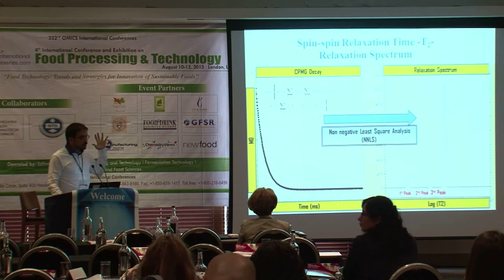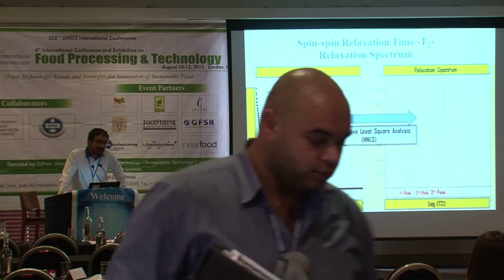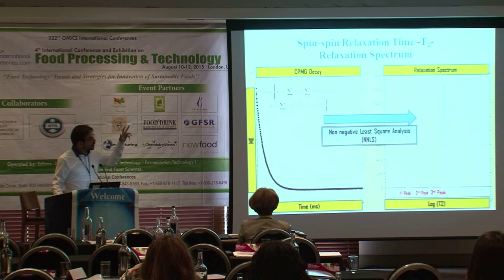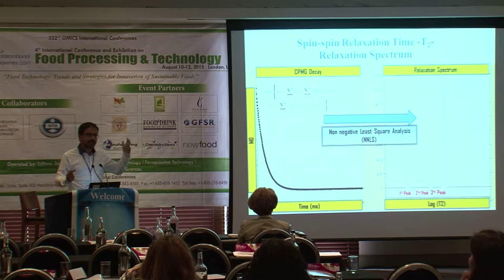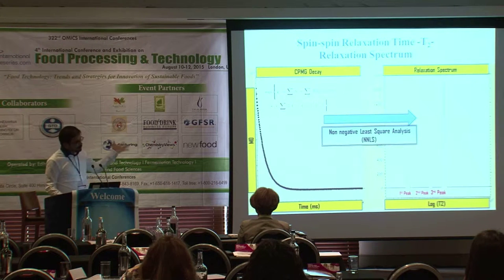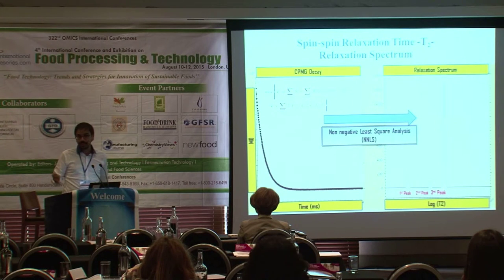What NMR relaxometry means is: whenever we have this decaying signal, we apply a mathematical transformation — the inverse Laplace transform — to obtain a spectrum called the relaxation spectrum. Depending on whether it is T2 or T1, it's called the T2 relaxation spectrum or T1 relaxation spectrum. What we have concentrated on is utilizing the information obtained from a T2 relaxation spectrum.